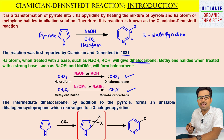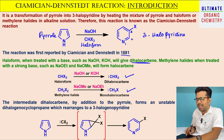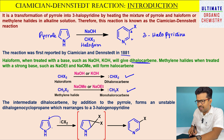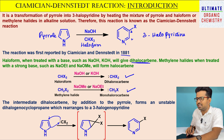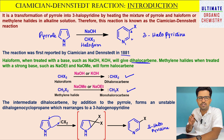Whatever carbene is formed in this reaction has to react with the pyrrole moiety. The intermediate dichlorocarbene, in addition to pyrrole, forms an unstable dihalogenocyclopropane, which rearranges to 3-halopyridine. There is a cyclopropanation reaction happening here — this electron is going here and this electron will be attacking this carbon, leading to the formation of a cyclopropane intermediate. This cyclopropane intermediate is unstable and will undergo rearrangement to give the final product, 3-halopyridine.